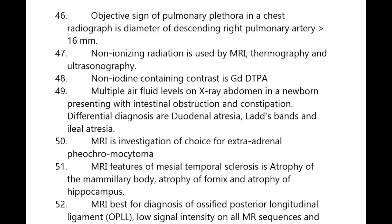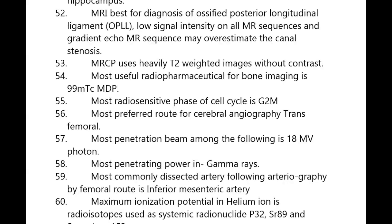MRI is the investigation of choice for external adrenal pheochromocytoma. MRI features of mesial temporal sclerosis include atrophy of the mammillary body, atrophy of the fornix, and atrophy of the hippocampus. MRI is best for diagnosis of ossified posterior longitudinal ligament — low signal intensity on all MR sequences; gradient echo MR sequence may overestimate canal stenosis.